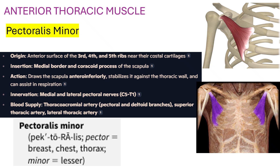The second anterior thoracic muscle is Pectoralis minor. Origin is the anterior surface of the third, fourth, and fifth ribs near the costal cartilages. Insertion is the medial border and the coracoid process of the scapula.